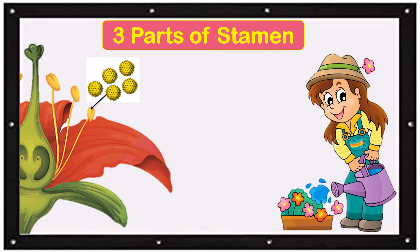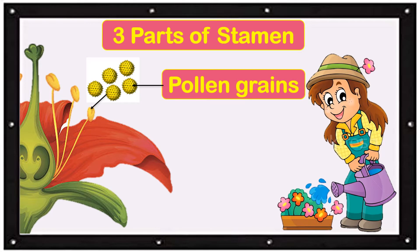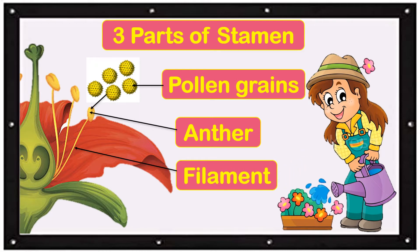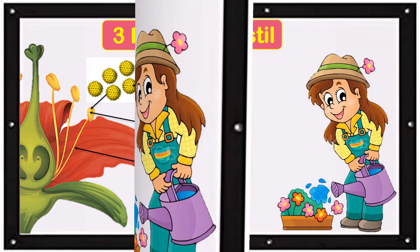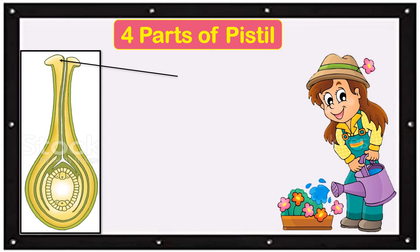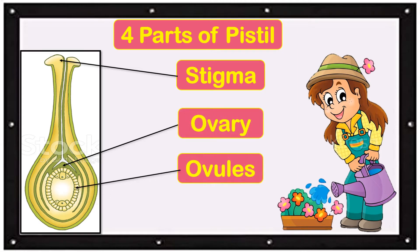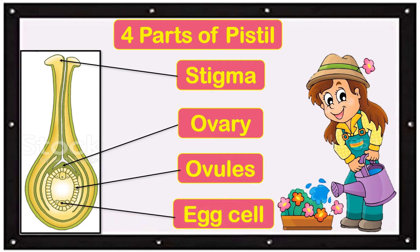There are also three parts of the stamen. These are the pollen grains that can be found inside the anther. And the third part of the stamen is the filament. There are four parts of the pistil: the upper part is the stigma, which is the sticky one. Going deeper, we have the ovary, ovules, and egg cells.